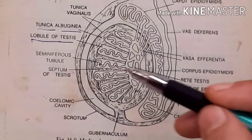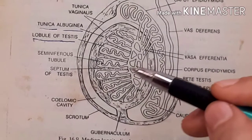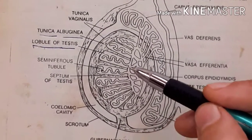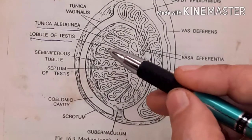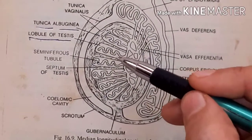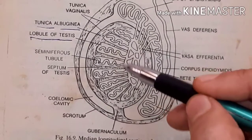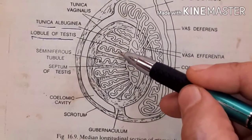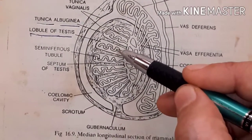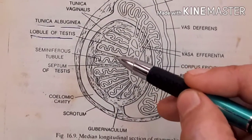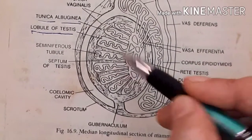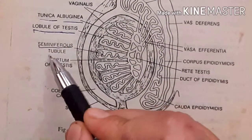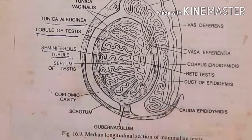Each lobule contains 1 to 3 coiled tube-like structures called seminiferous tubules.